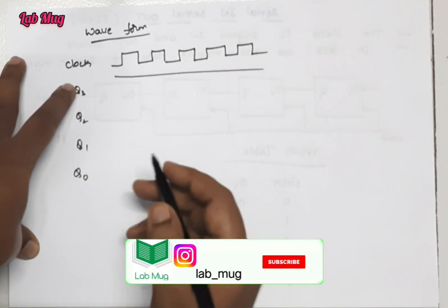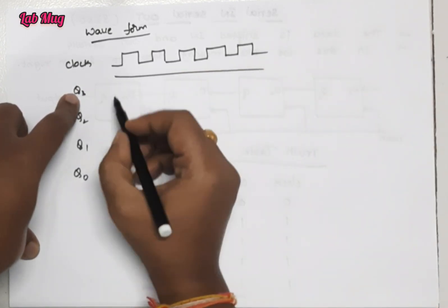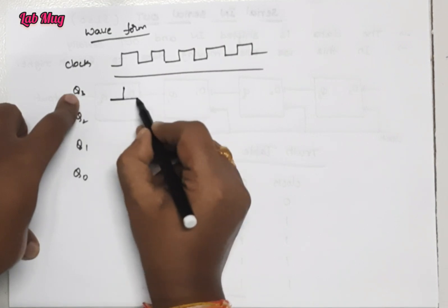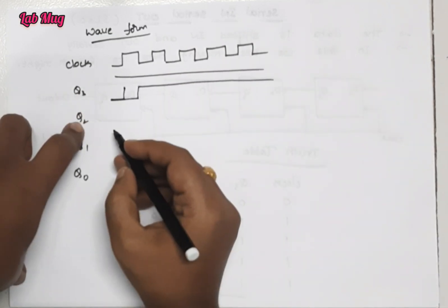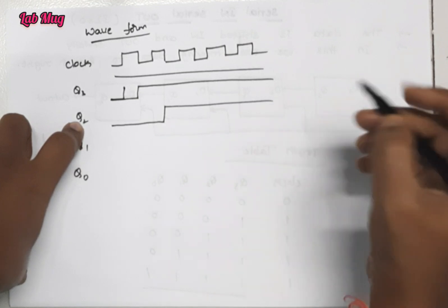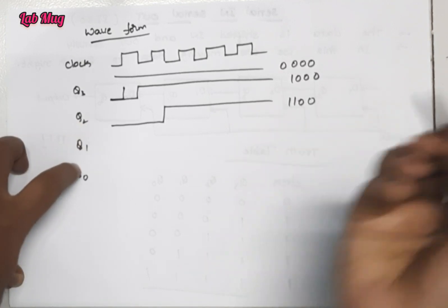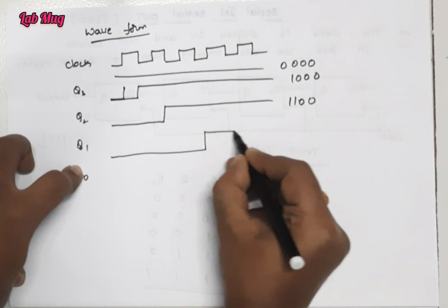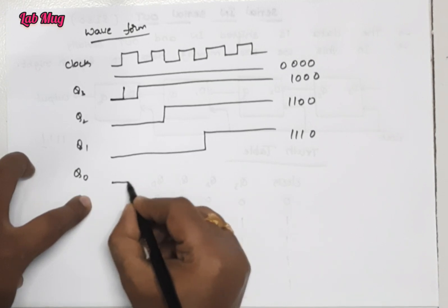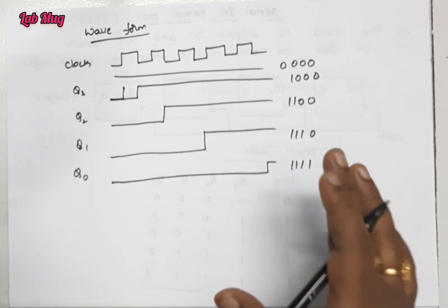Then Q3, Q2, Q1, and Q0. When we take zeros, the waveform is like this. For Q3: one zero zero zero. First zero, then Q2 is like this: one zero zero zero. This is zero zero zero zero. Then the next one is one one zero zero. Next Q1.